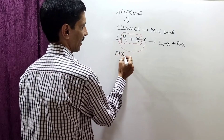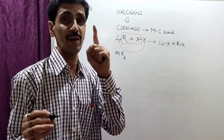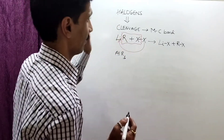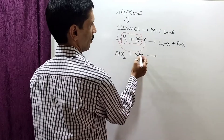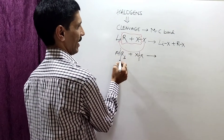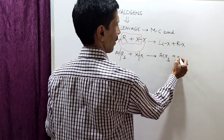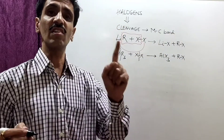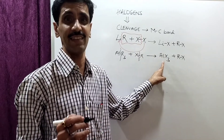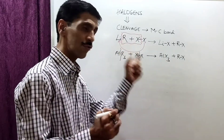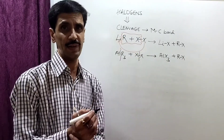Those were two examples of electropositive elements where complete cleavage of the bond takes place. Now I'll give you another example — boron. It is an element of the same group 13 as aluminium, but because boron's electropositivity is less, the cleavage of the boron-carbon bond is less. Only one of the B–R bonds breaks: R goes with one X, and the other X forms a bond with boron. So we had BR3 and now we get BR2X plus RX — an incomplete bond-breaking process.